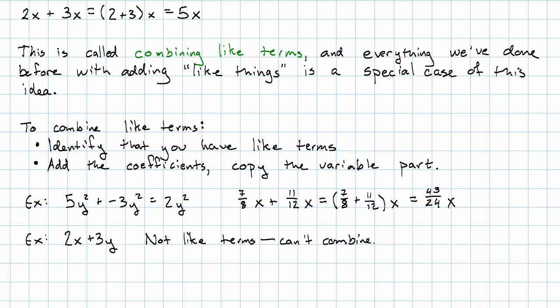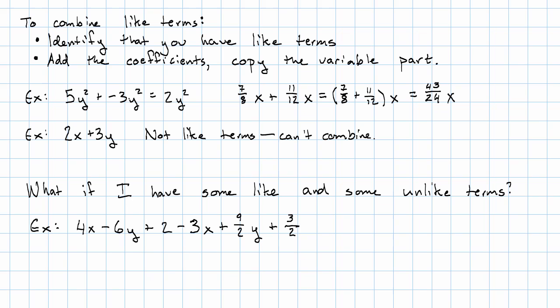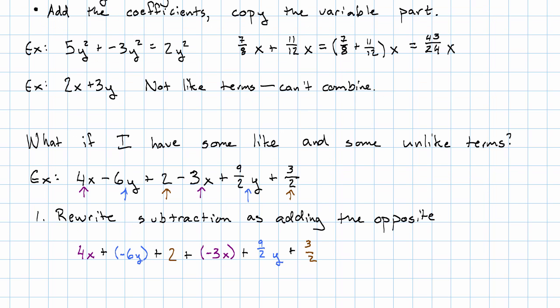Now, what if you have a wide variety of terms in a number? In this example, we have three different kinds of terms. We have these x terms, we have some y terms, and we have some constant terms with no variable part. What should we do? Well, the first thing we should do, so that we can see the terms clearly, is rewrite all the subtraction as adding the opposite. Again, we wanted to do that so that we could see the terms clearly, and also, because now we're going to use the commutative property of addition.